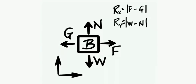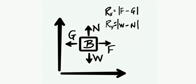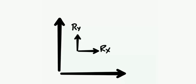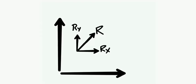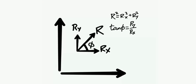Now we have body B and the net resultants along the horizontal and vertical are known to us. To calculate the resultant of all four forces, we find R as the vectorial addition of Rx and Ry. The magnitude is given by R² = Rx² + Ry², and the direction is given by the angle phi where tan(phi) = Ry / Rx.